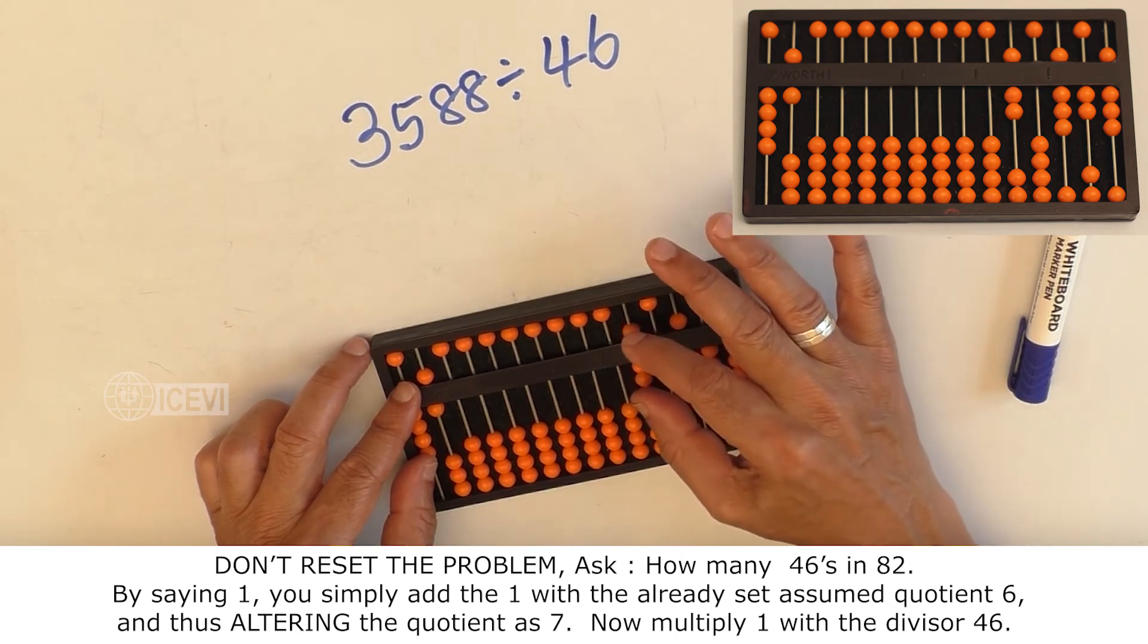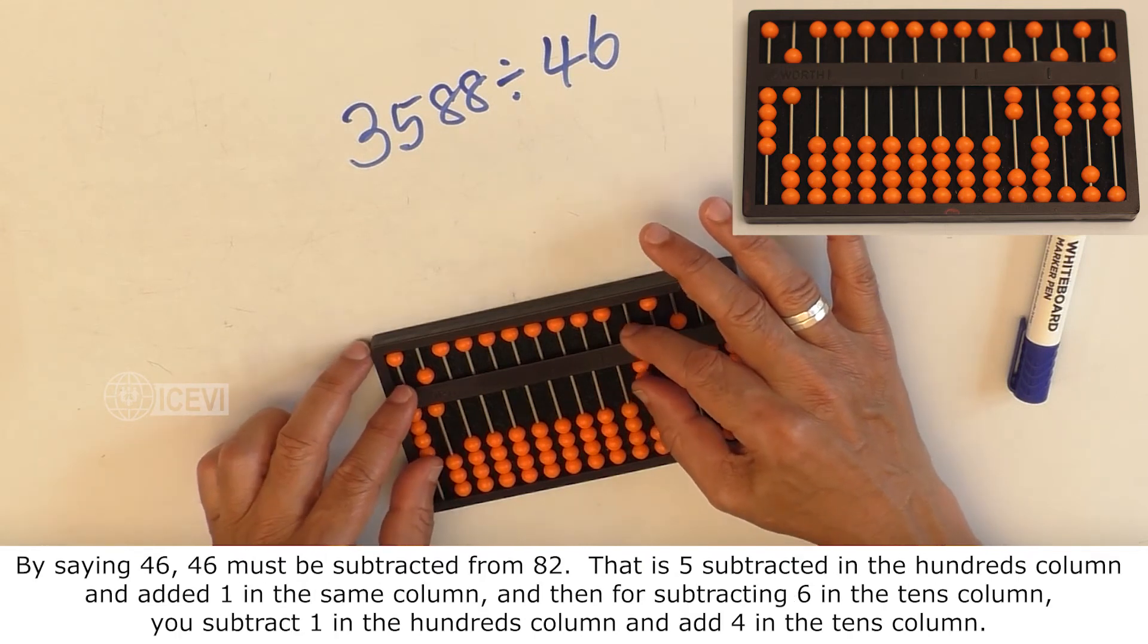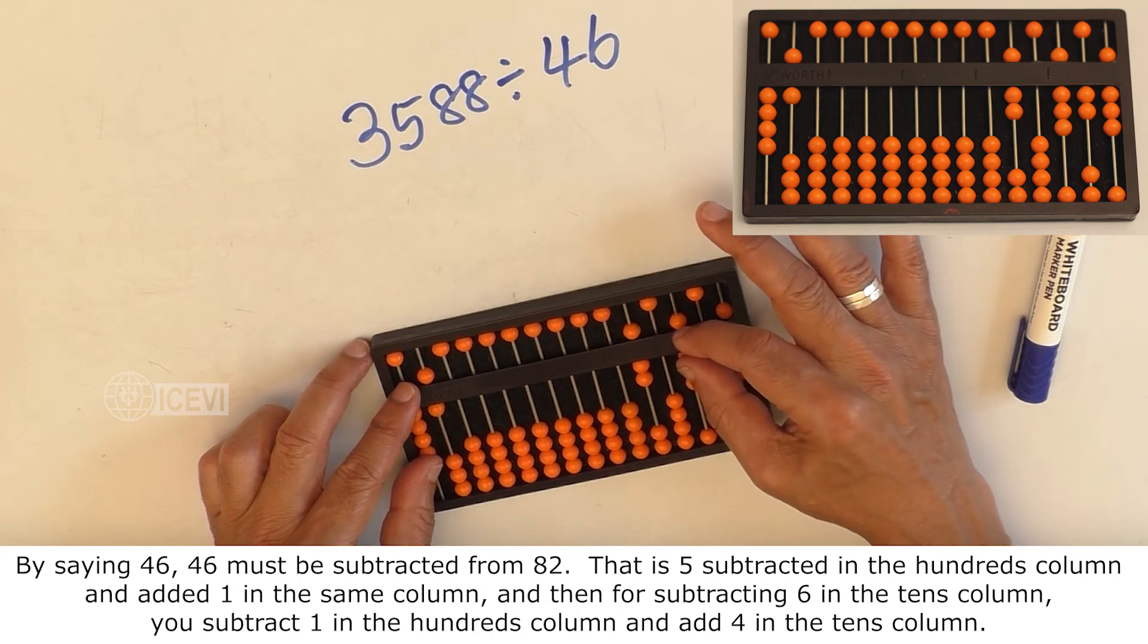Now multiply 1 with 46. By saying 46, 46 must be subtracted from 82.